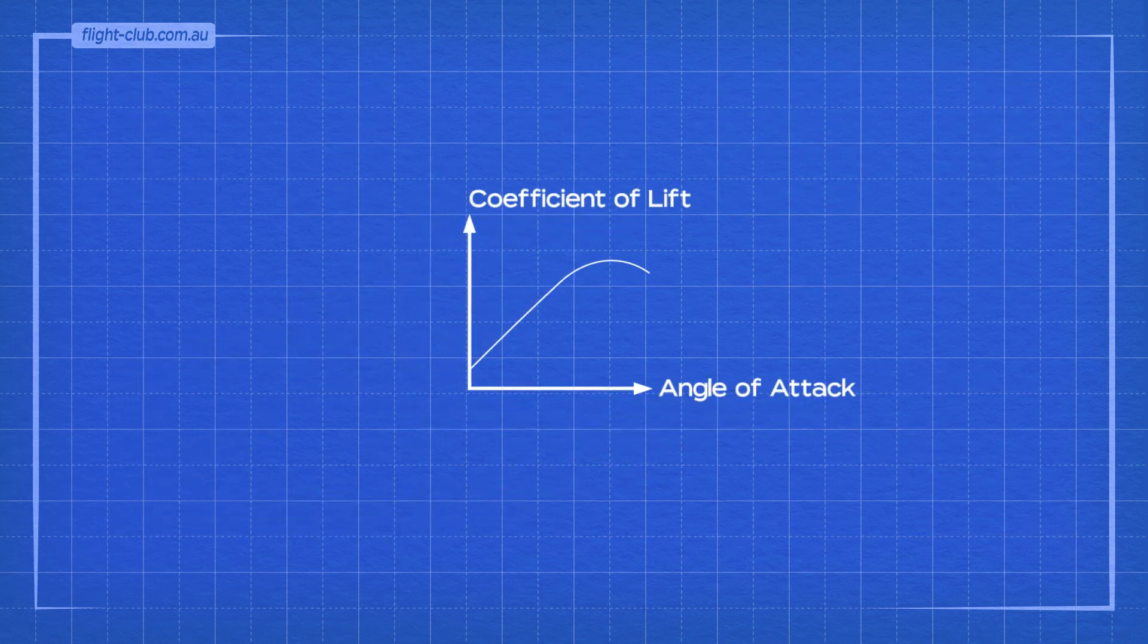Unlike lift, the coefficient of lift is a dimensionless quantity that has no units like pounds or newtons. Coefficient of lift is a value that allows us to compare the wing's lifting ability at a given angle of attack.